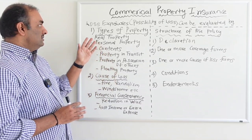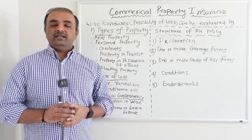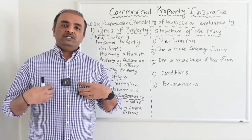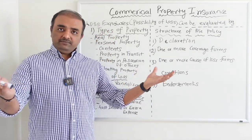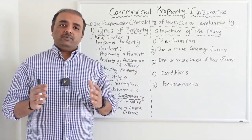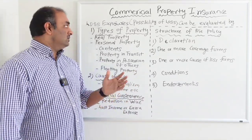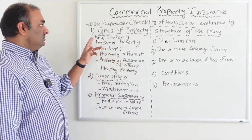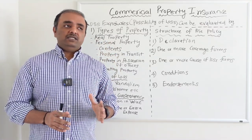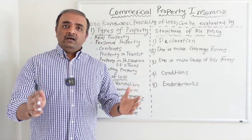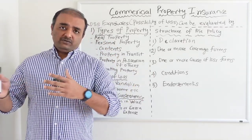Step number one is the type of property that you use. If you have your own business, you could have a building or personal property that you use for your business. The first category is real property. When I say real property, it is a building or a garage which is attached to my building.